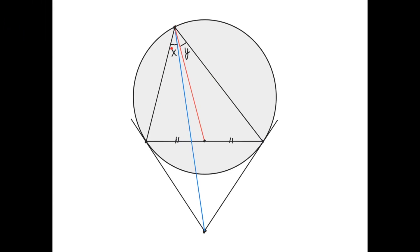If this angle here is x and this angle here is y, let's prove that x equals y. Let's label the angles in the triangle alpha, beta, and gamma.